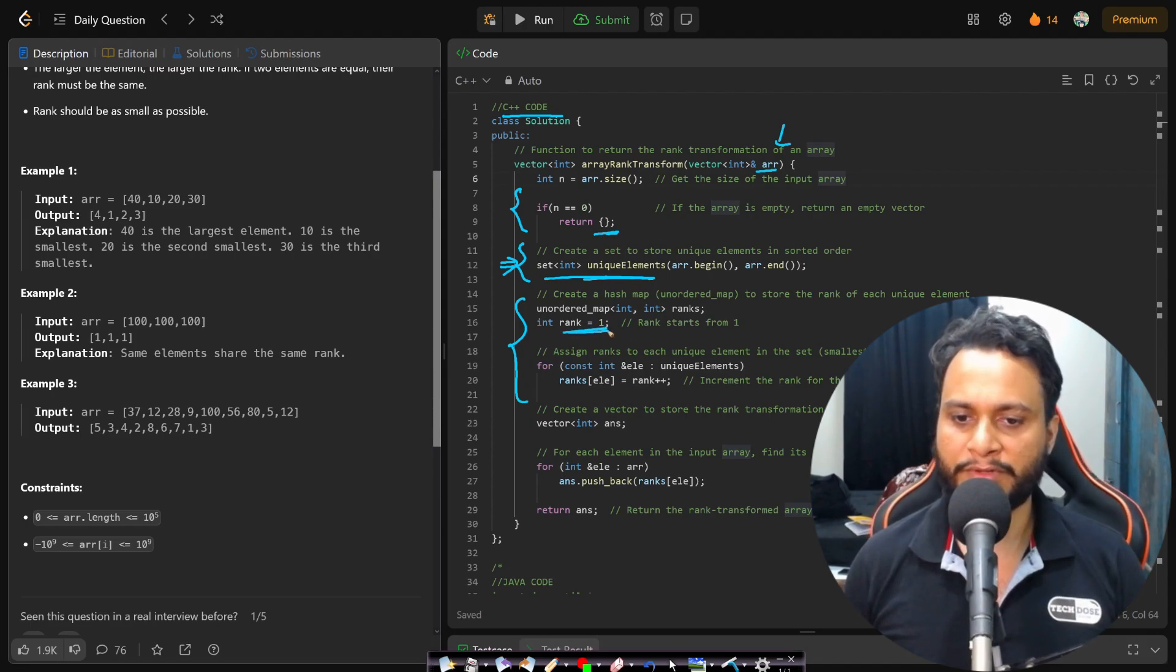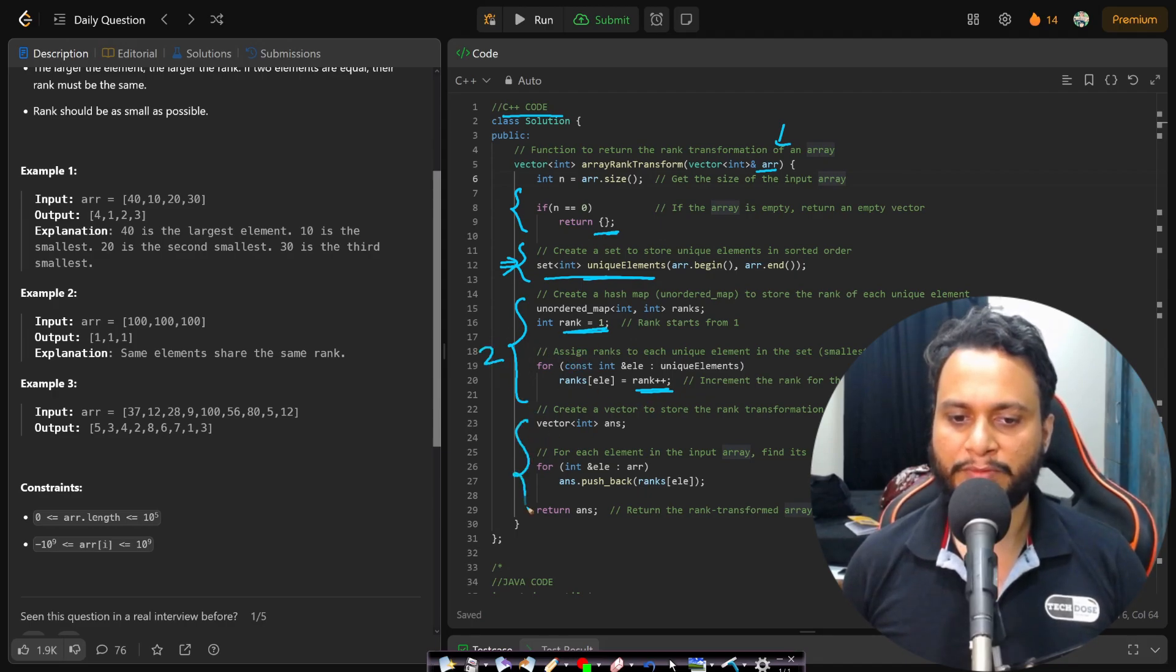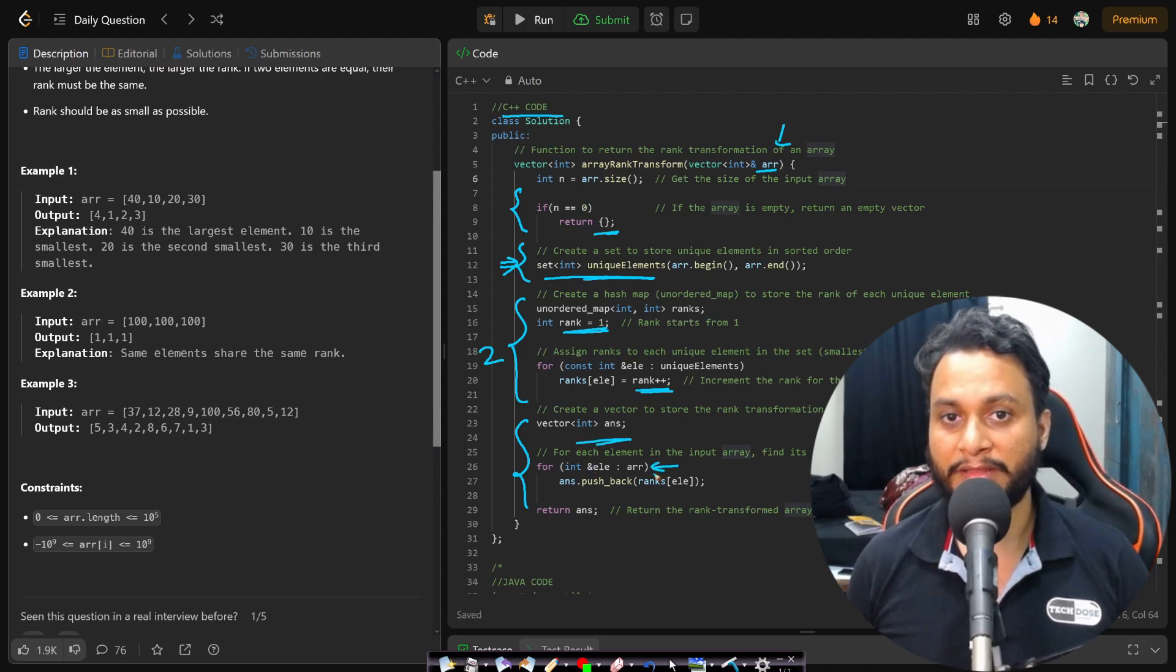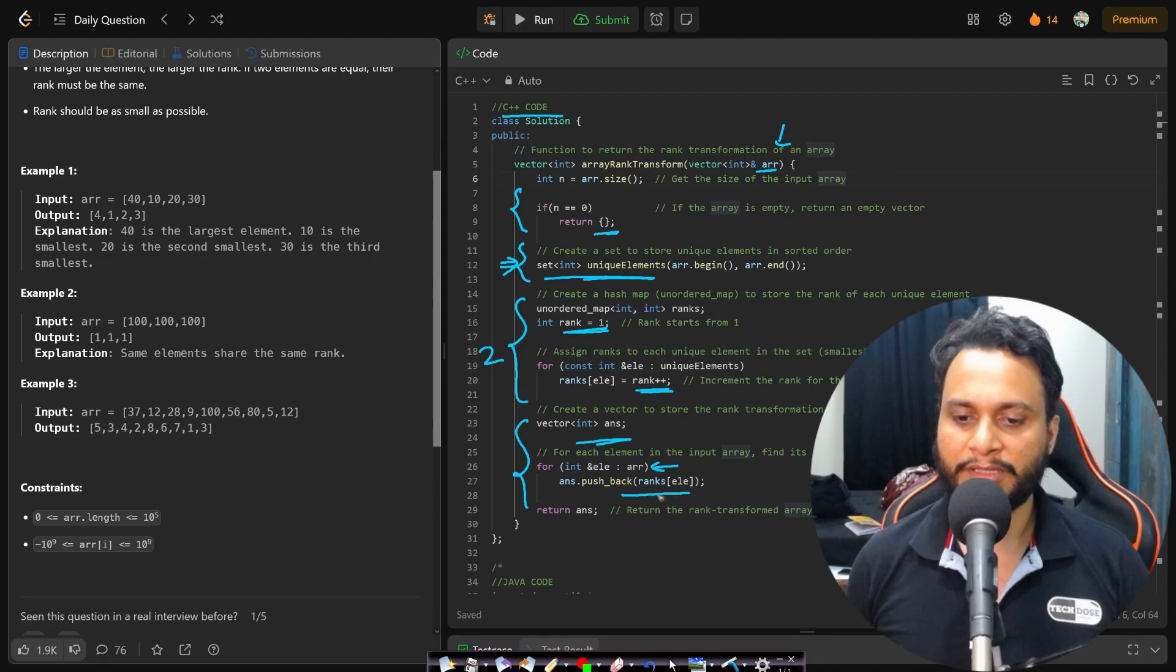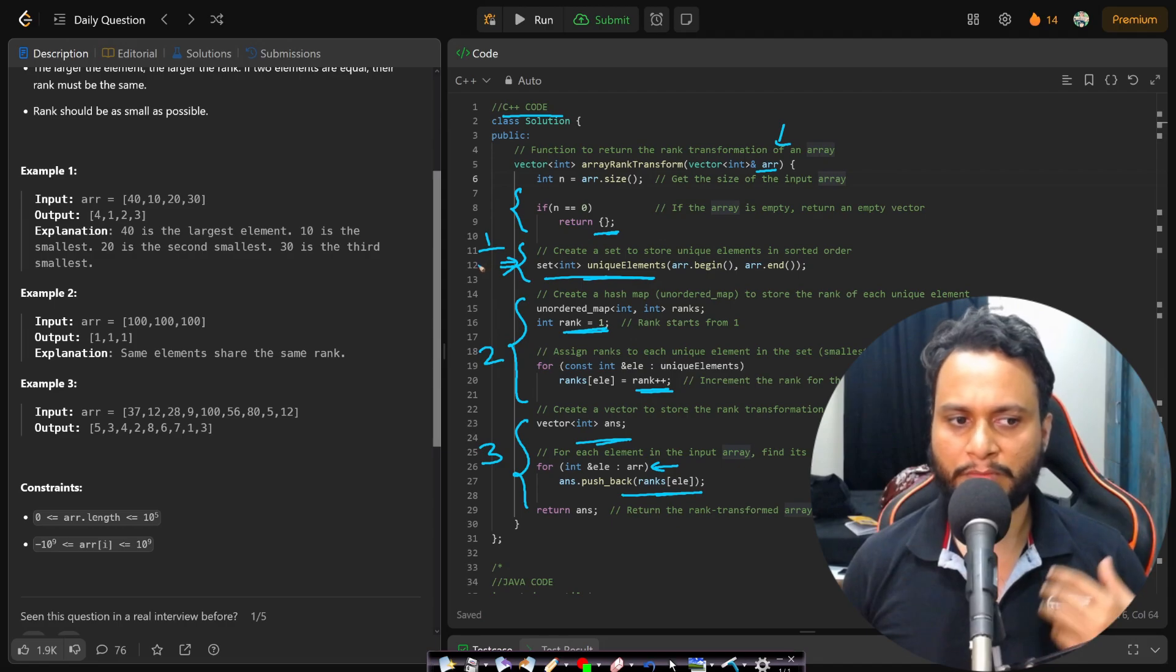Now in step number two, we have to insert all the elements of these unique elements set into our map with the corresponding rank. So the rank will be initialized with one for the first item and for every unique item, we will do rank++ and insert it into the map. So this is step number two. Now in step number three, we will take an answer array and then we will be iterating through all the items in the original array and pushing their corresponding ranks by looking at the ranks ordered map. So this is step number three.